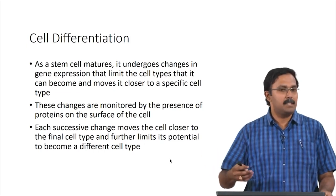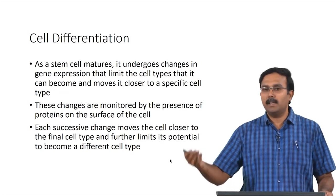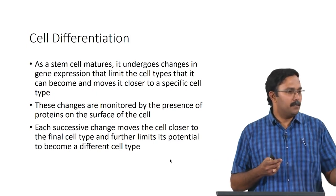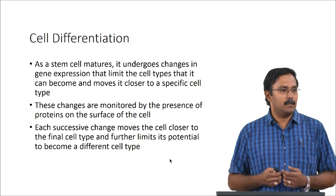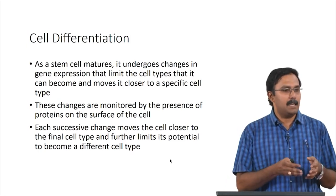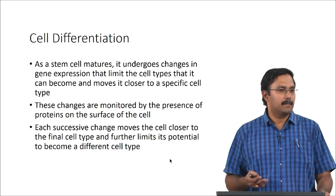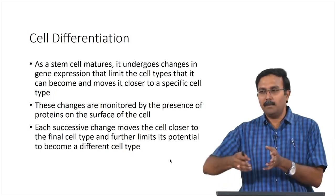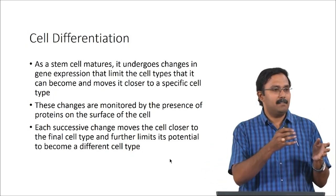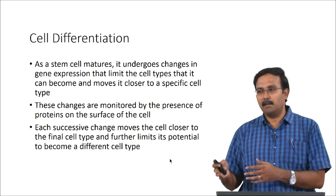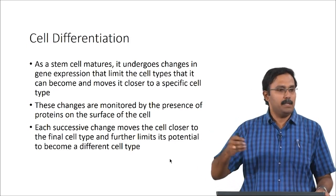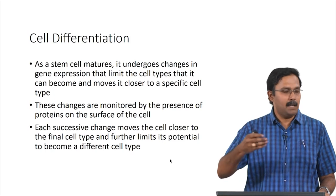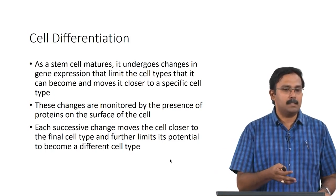With each successive change, the cell moves closer to the final differentiated cell and its potential for becoming a different cell type becomes lesser. It becomes more and more committed towards one particular cell type as more changes happen. It is not a one-step process — it is not like stem cells form a committed progenitor which then miraculously changes to one particular cell type. It is a sequential process which takes a significant amount of time, and as time goes on it gets more and more committed towards a particular cell type.